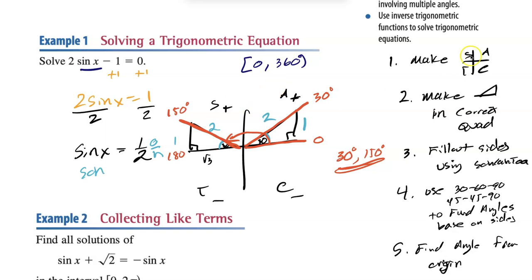So that's the process: start with All Students Take Calculus, make triangles in the correct quadrants, fill out the sides using SOHCAHTOA — that tells us the reference angle — then find the angle from the starting point.